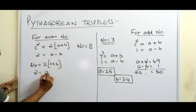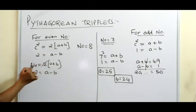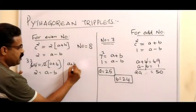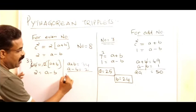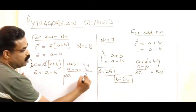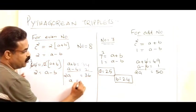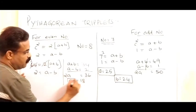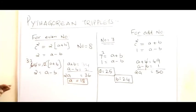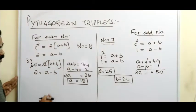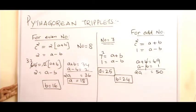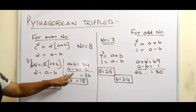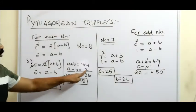Dividing 64 by 2 gives 32, so we rewrite as a + b = 32 and a − b = 2. Wait — I made a mistake there. Adding the equations: 2a = 34, so a = 17.